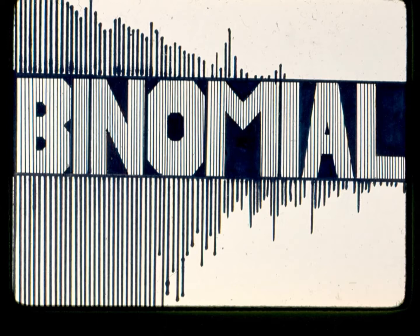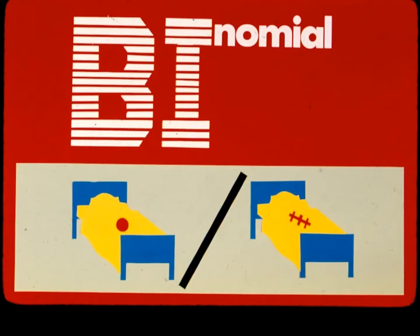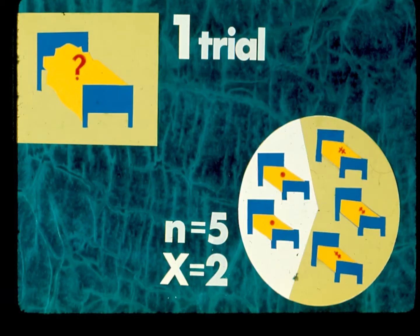The remainder of this section focuses on the binomial distribution, an example of which is the distribution of the variable X that we just saw. For this variable, as for all binomial variables, there are two possible outcomes of interest for each individual. In this case, for each of the five surgical patients, either the patient has wound disruption or he doesn't. The experience for any one patient is called a trial. The number of trials here is 5, and we write n equals 5. The variable X counts the number of patients with wound disruption out of 5 trials.